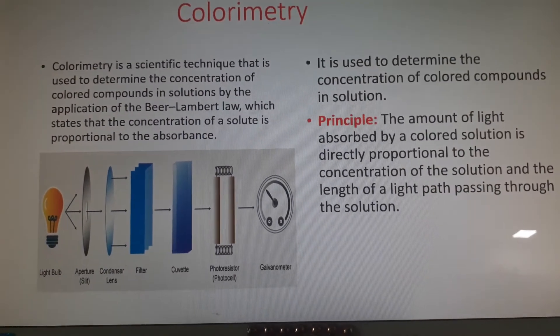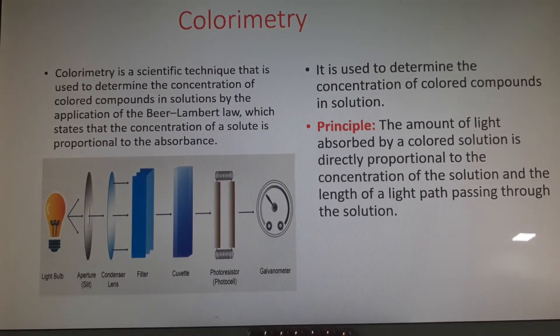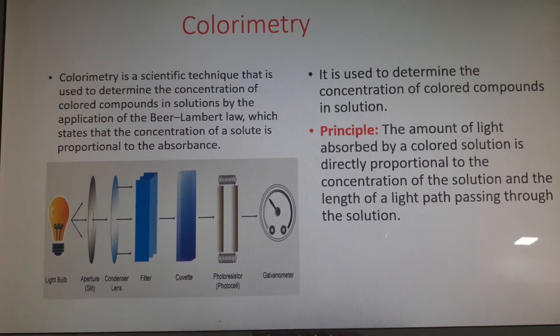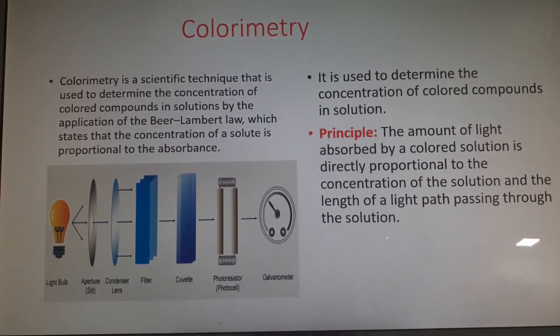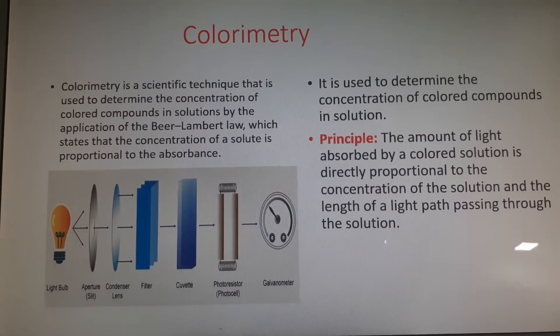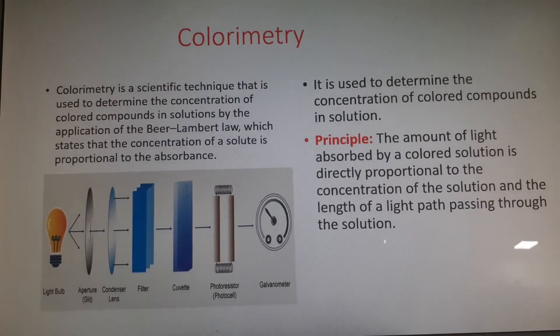The colorimeter obeys Beer-Lambert's law, which tells us that absorbance is directly proportional to the concentration of the solute. If the concentration is more, the absorbance is more.